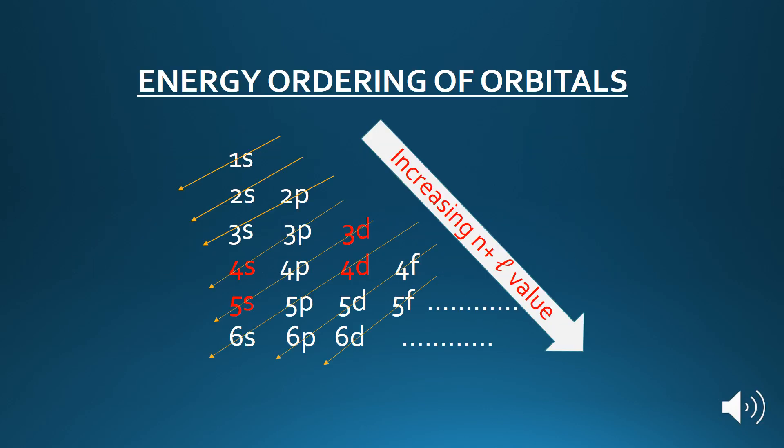Let's see the energy ordering of the orbitals. As you can see in the diagram, filling starts from low energy towards high energy. We first fill the 1s subshell because it has the least energy, then 2s, 2p, 3s, 3p, and then 4s instead of 3d. We fill 4s first because 4s has less energy compared to the 3d subshell. Similarly, the 5s orbital is filled first instead of 4d, for the same reason.